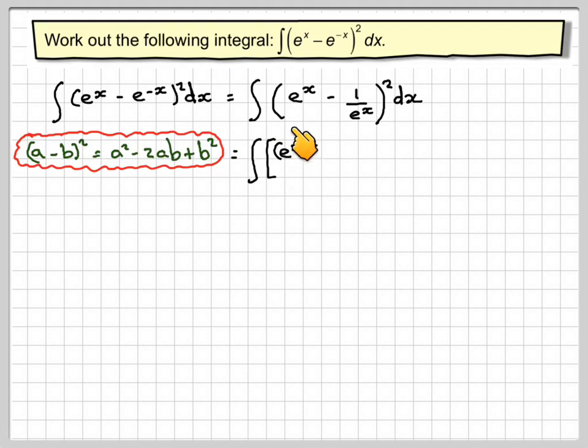So that becomes e to the x all squared which is e to the 2x minus 2 times e to the x times 1 over e to the x plus b squared which is going to be 1 over e to the 2x. This is a plus here with respect to x.